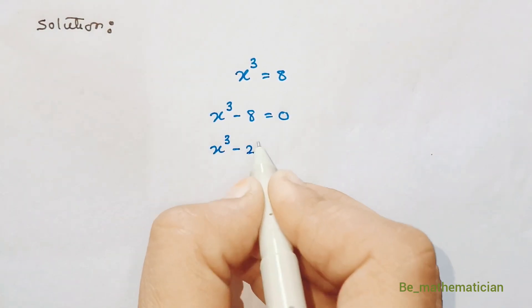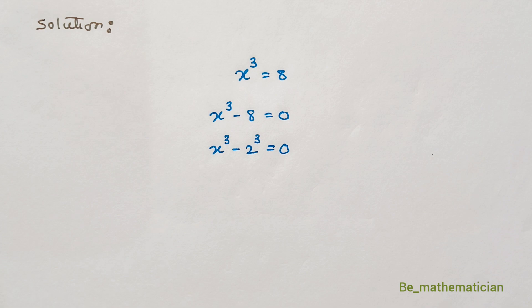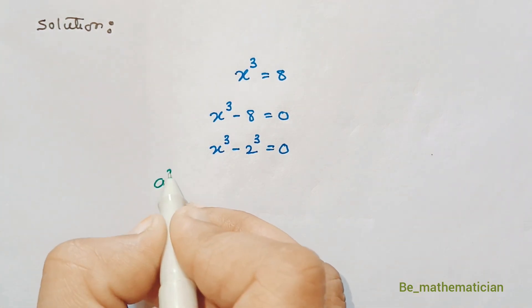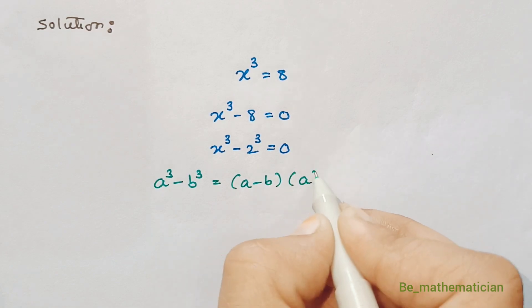So in place of 8, we can write 2 cube. Now this equation is in the form of a cube minus b cube, which is equal to a minus b into a square plus ab plus b square.